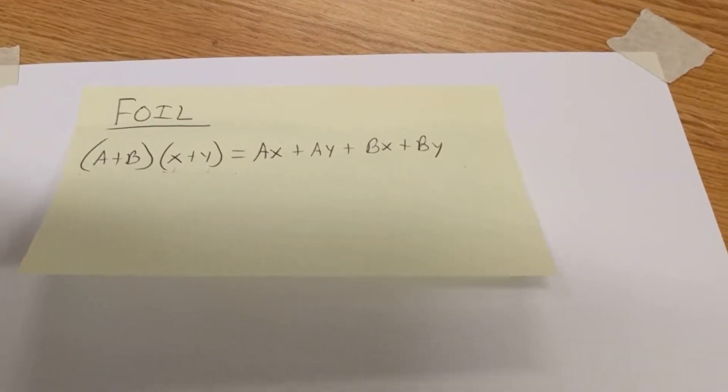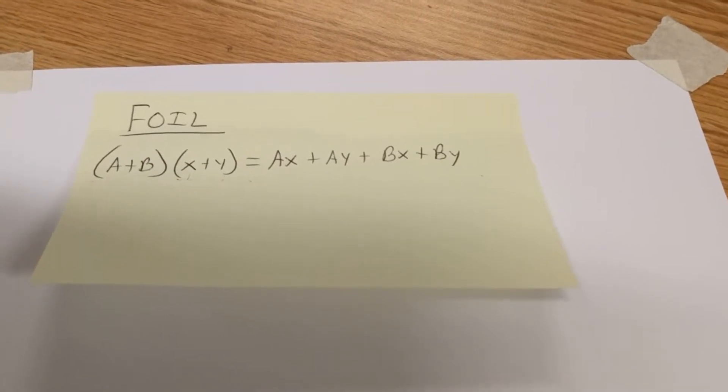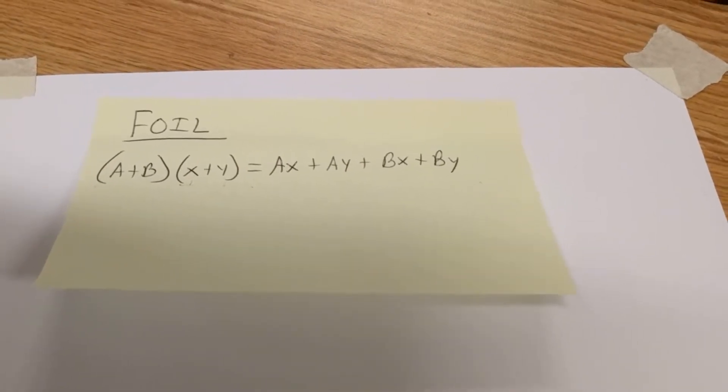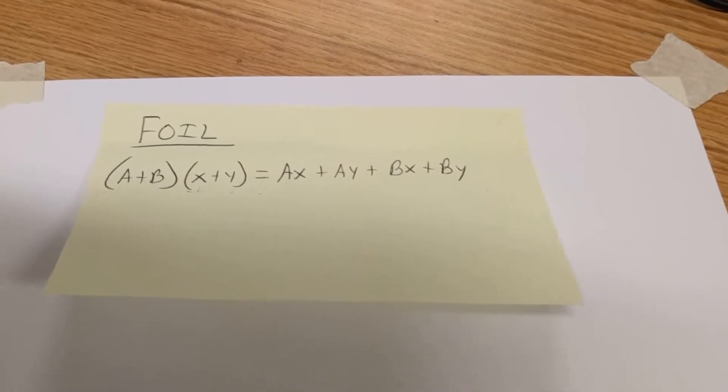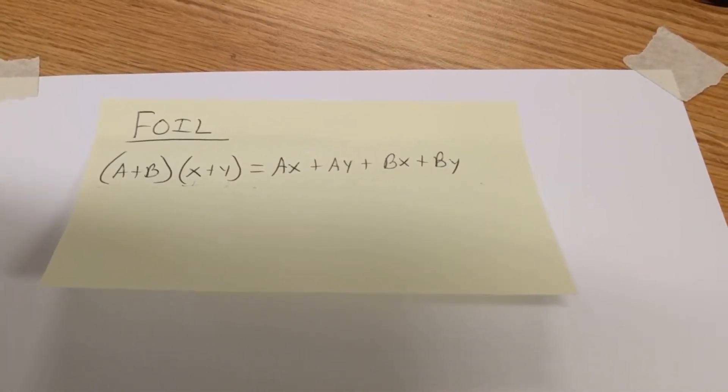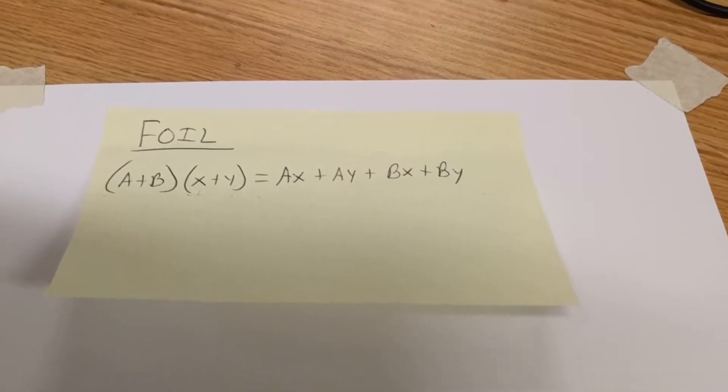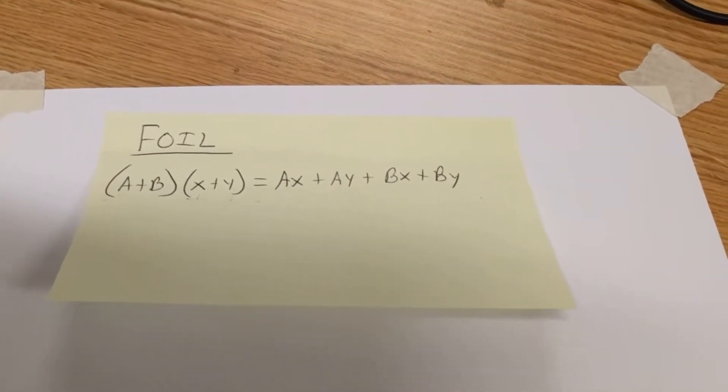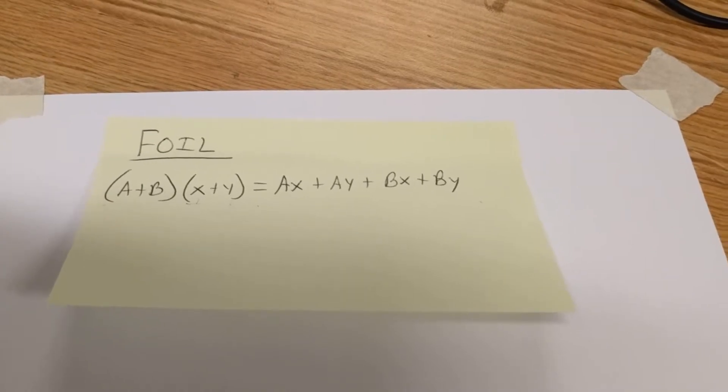Now, the only issue I have with this is how do we know it's true, aside from what our teachers have told us? So what I'd like to do is, using the distributive property, show an equivalence to give the reasoning of why we multiply all of these components together.